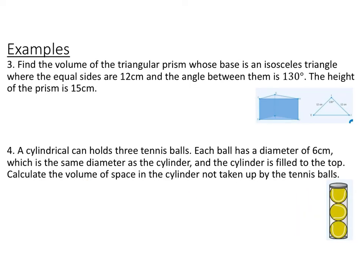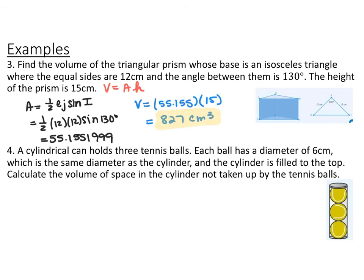Find the volume of a triangular prism whose base is an isosceles triangle with equal sides of 12 centimeters, an included angle of 130 degrees, and the height of the prism is 15 centimeters. The volume of a prism is the area of the base times the height. The base is a side-angle-side triangle, so area equals one-half times 12 times 12 times sine of 130 degrees, giving 55.1552 square centimeters. Multiplying by the prism height of 15 gives a volume of 827 cubic centimeters.